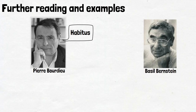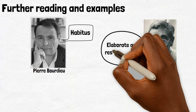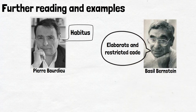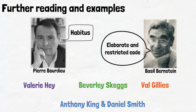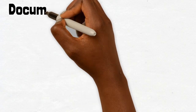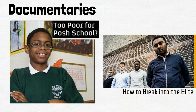A sociologist called Basil Bernstein also conducted a famous study on what he called elaborate and restricted codes, which further explains children's advantage and disadvantage at school specifically with regards to their use of vocabulary. More recent studies by Beverly Skaggs, Valerie Hay, Val Gillies, and Anthony King and Daniel Smith highlight cultural capital and how it is used in the workplace, education, and within peer groups. There are also great documentaries out there: BBC's How To Break Into The Elite and Channel 4's Too Poor For Posh School both have great examples of cultural capital in action.